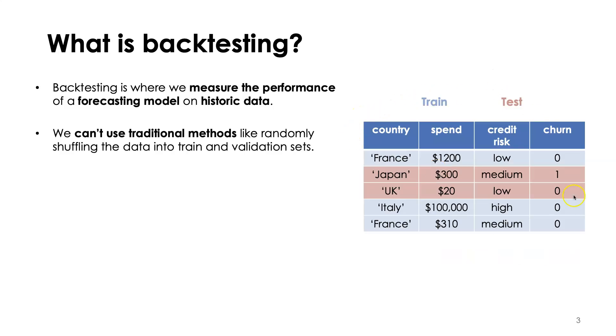Typically when we work with tabular data we will randomly allocate some rows to a training set and other rows to a test set. We then train the model on our training set and test it on the rows in the test set.